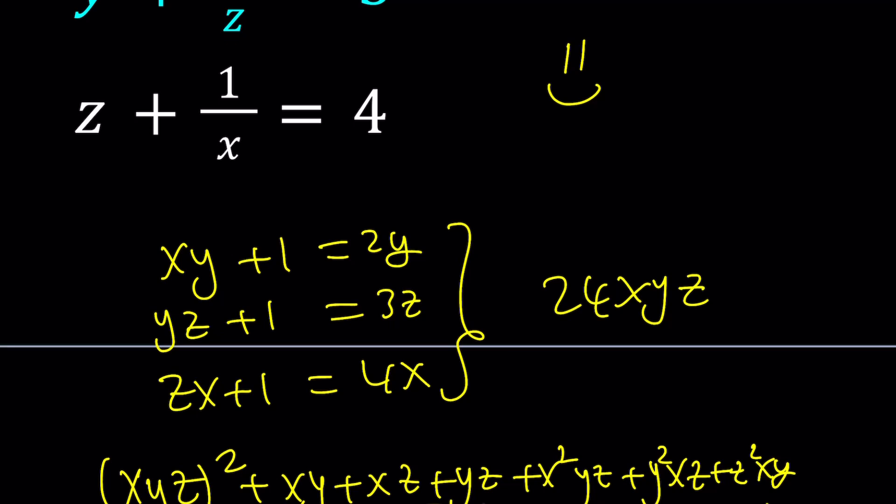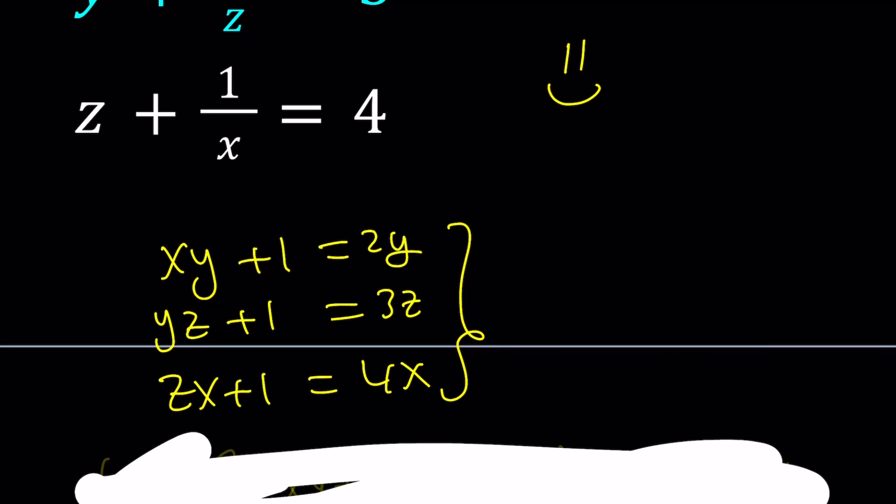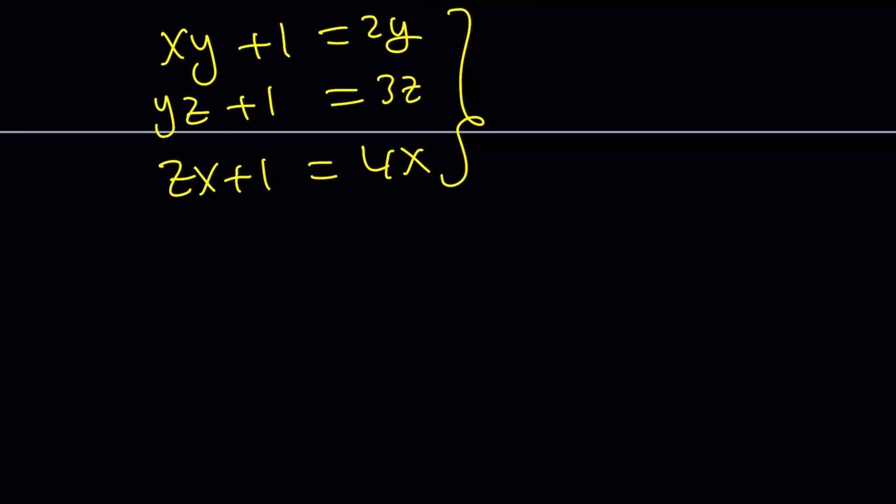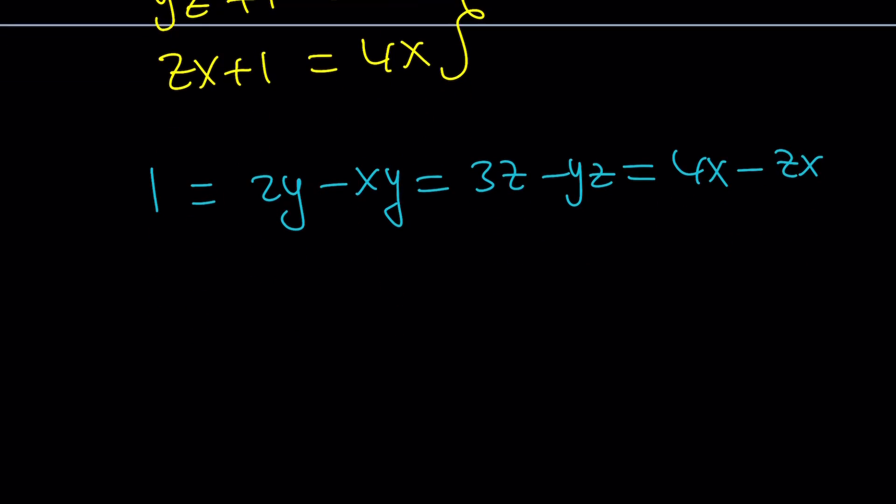Another way to look at this problem is using a different idea. Notice that each of these equations have 1 in them. So that's a really nice thing that makes the problem easier. So you can go ahead and set each of these equal to each other. So like, for example, 1 can be written as 2y minus xy, or 3z minus yz, or 4x minus zx. Make sense? They're all equal to 1. So they're equal.